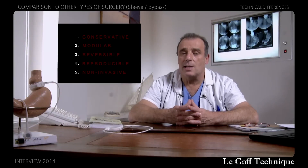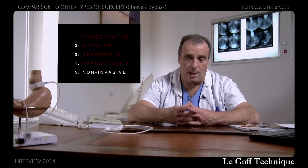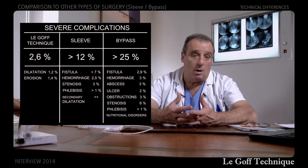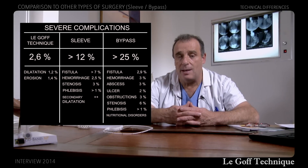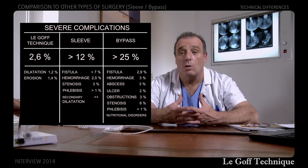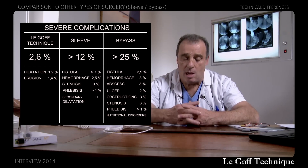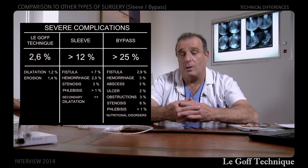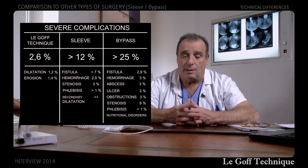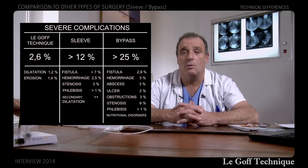The fifth major difference is the non-invasiveness of the Le Goff technique compared to sleeve and bypass. The risk of complications is much lower in the Le Goff technique. If complications do occur, which is extremely rare, they are much less severe than in sleeve or bypass, where they can be extremely serious and even lead to operative mortality. In the Le Goff technique, the complications are very low: 1.2% dilation and 1.4% stomach erosion.